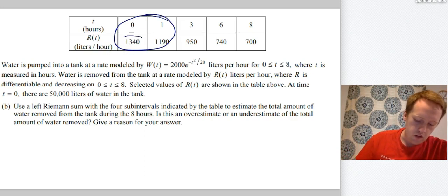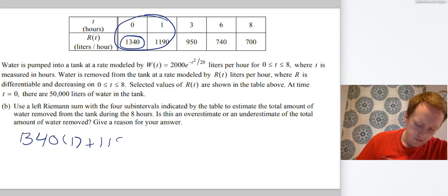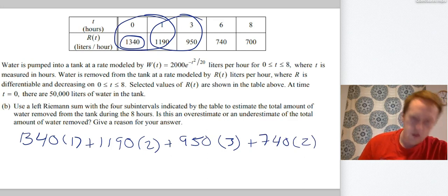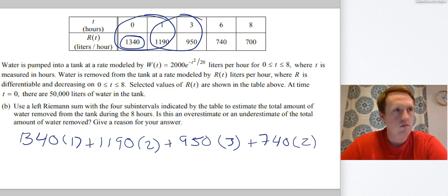So the first thing I see is, here's my first subinterval. I'm going to use the 1340 times the width of the interval, which is one, plus 1190 times the width of the interval, which is two. Because this next interval. Now I'm going to do 950 times the width of the interval, three, plus 740 times two. So there's my Riemann sum. And you have to write these numbers out. You can't just jump to an answer.